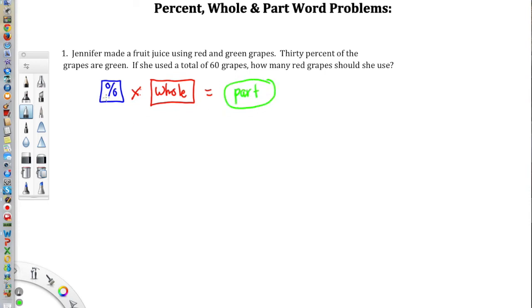the whole will equal our part. Whatever that may be. We take the percent, we multiply it by the whole, and that gives us our part. Now what we need to do is we need to go through our word problem, read it, and find these different items.